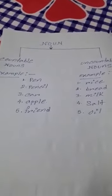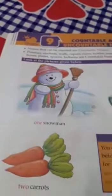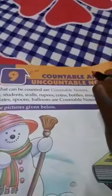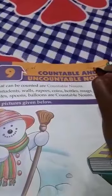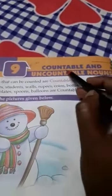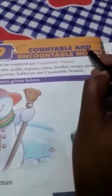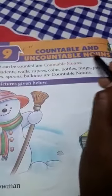I hope you understand what are countable nouns and what are uncountable nouns. Now all of you take out your book, page number 34. Put classwork and today's date here. Now all of you read after me.